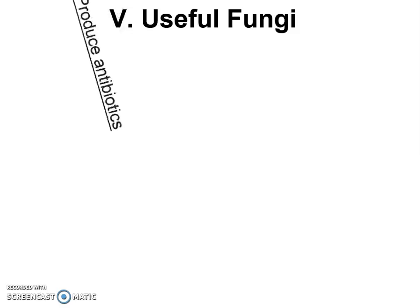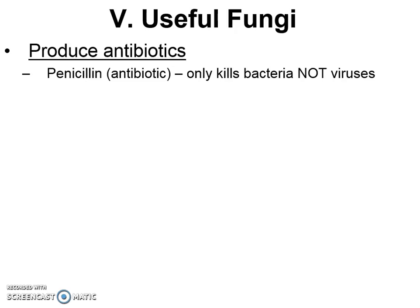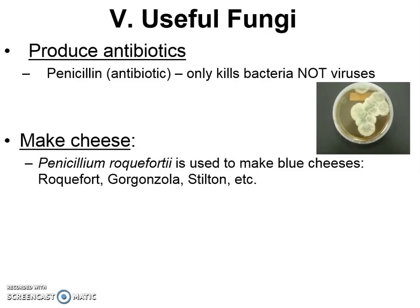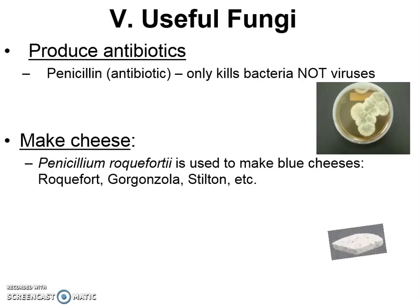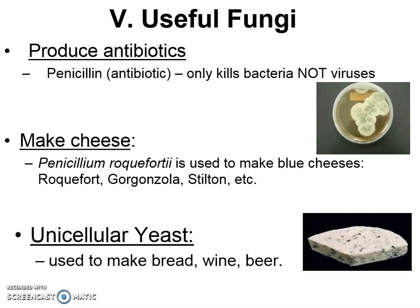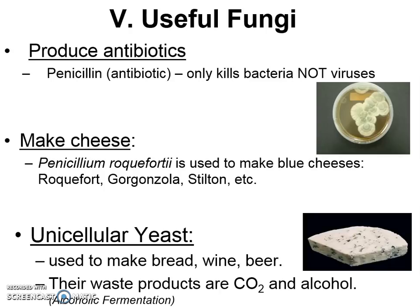Fungi are useful — we use them for a lot of things. We use them to produce antibiotics like penicillin. Remember, the word antibiotic has 'bio' in it, so it only kills living things, not viruses. We also use fungi to make cheeses, mostly blue cheeses. They are also useful because yeast — our example of a unicellular fungus — is used to make lots of food: bread, wine, and beer. Back at the beginning of the year, we learned about alcoholic fermentation — the anaerobic respiration of yeast — and how yeast gives off both alcohol and CO2 through respiration. That was alcoholic fermentation without oxygen, and we use that to make bread, wine, and beer.